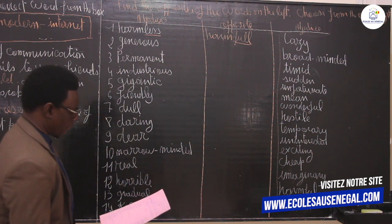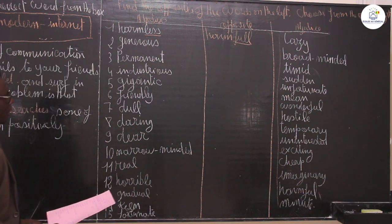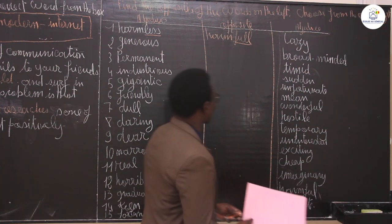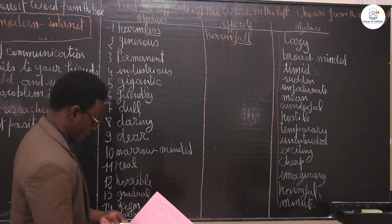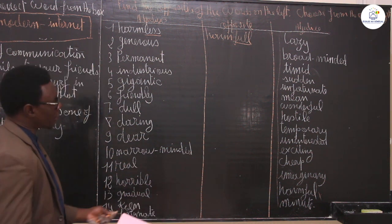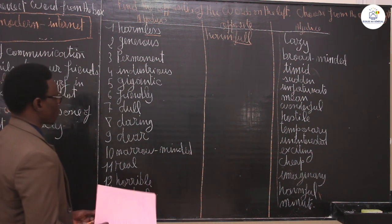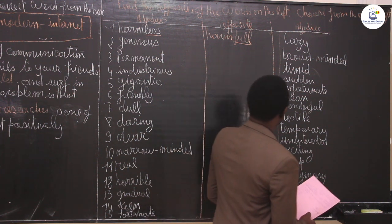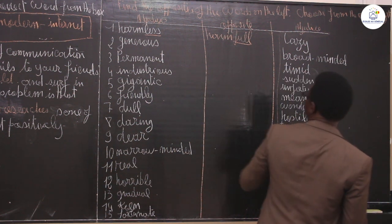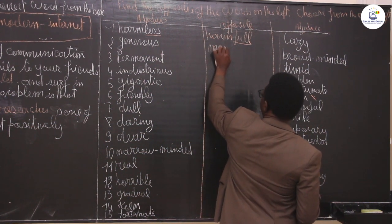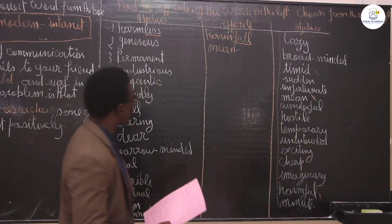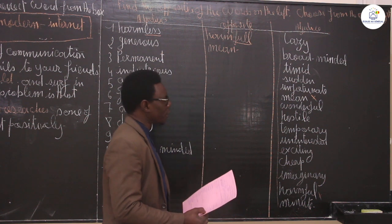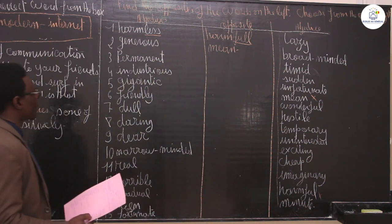The second word is generous. Generous is someone who doesn't mind giving whatever he has — someone who shares whatever he has with other people. The contrary of generous is, of course, mean. Mean is someone who thinks only about himself.